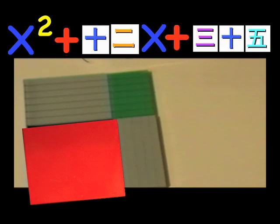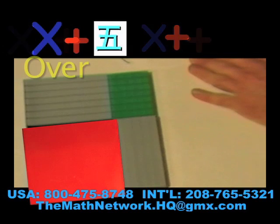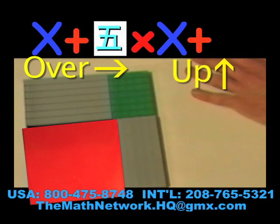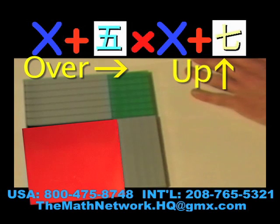Now, all we need to do is record our factors. Our distance over is x plus 5. Our distance up is x plus 7.